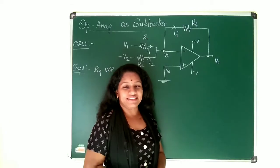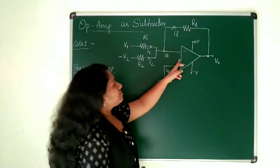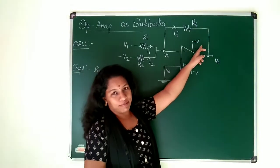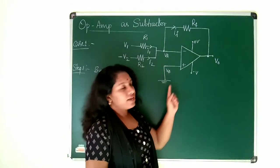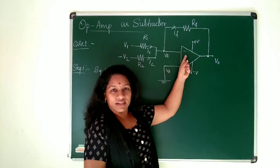Let us proceed with the first case. Here I have taken an op-amp with dual power supply plus V and minus V and non-inverting terminal is grounded and we are feeding input to the inverting terminal.